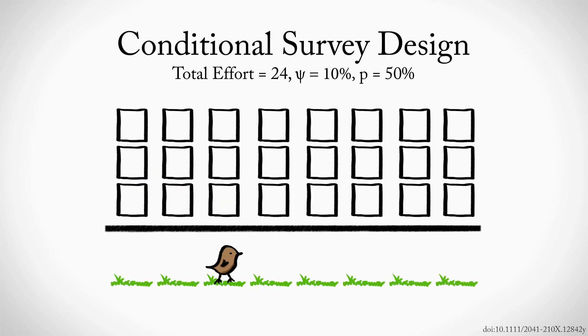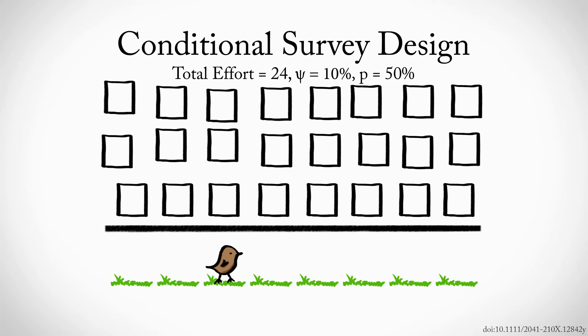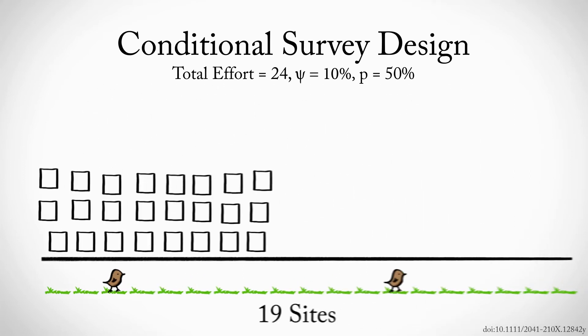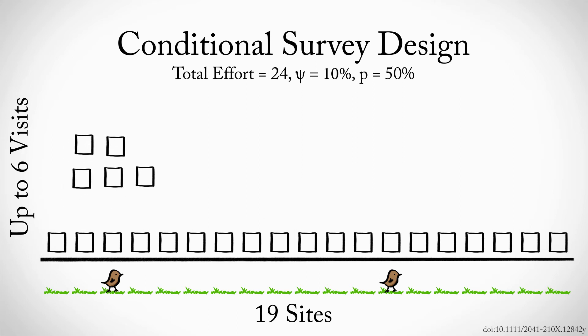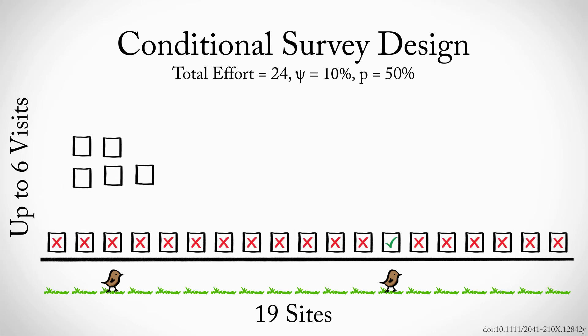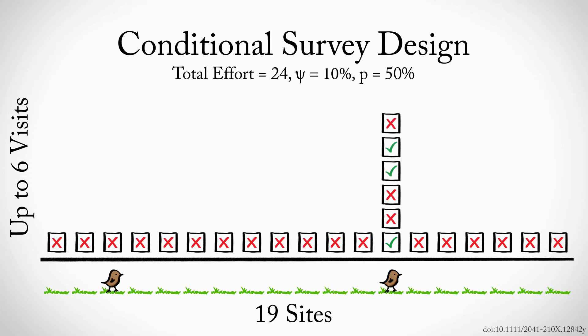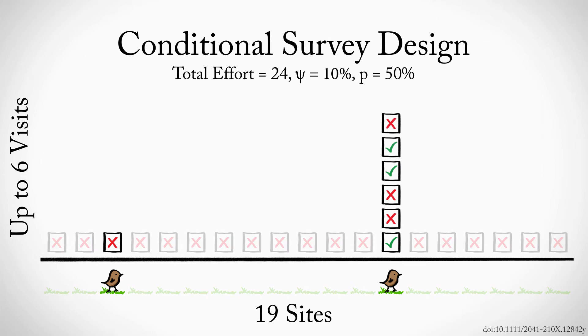Alternatively, the conditional design approach to studying the Little Brown Bird recognizes that for rare species, it's more important to spend effort on sites where we know the species is present. So we would use our 24 surveys to visit 19 sites just once, and then conduct an additional five surveys at the sites where we encountered a Little Brown Bird on the first survey — only one in this case. For the same amount of total effort, we would end up conducting more surveys at sites that are occupied — seven to be precise.